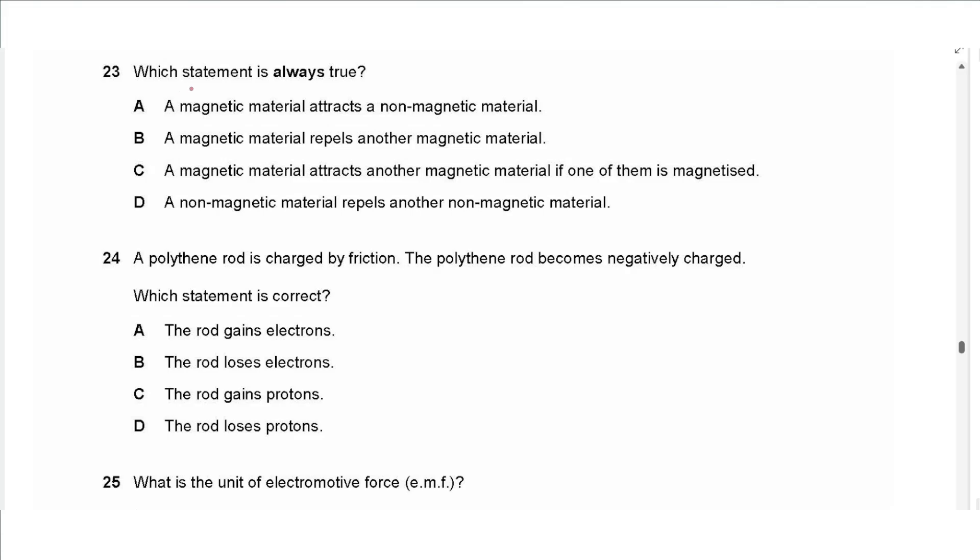Question 23 says which statement is always true. A magnetic material attracts a non-magnetic material, no. A magnetic material repels another magnetic material, no, not necessarily. A magnetic material attracts another magnetic material if one of them is a magnetized object, yes. If one magnetized one is a magnet and one is just a magnetic material, not magnet, they will always attract. So this sentence is correct, so we choose C.